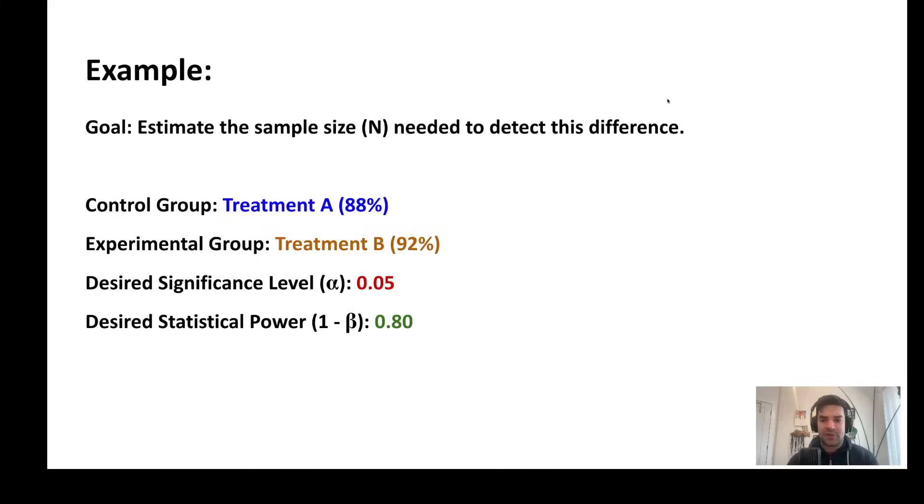So these are the data points that we've talked about so far. For this study that we might undertake, we will have an estimate of what we expect to cure in the control group, an estimate of what we expect in the experimental group. Again, these estimates are based on prior studies.